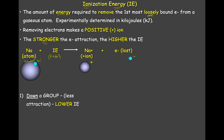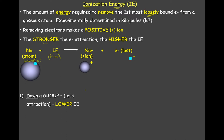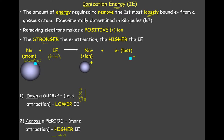As you go down a group, your radius is getting larger, so it becomes easier to pull off that electron because it's further away from the nucleus. However, when you look at going across a period, we find out that the attraction is greater. We would expect that ionization energy to get higher because as you go across a period, those radii are getting smaller, so it becomes more difficult to pull it off.